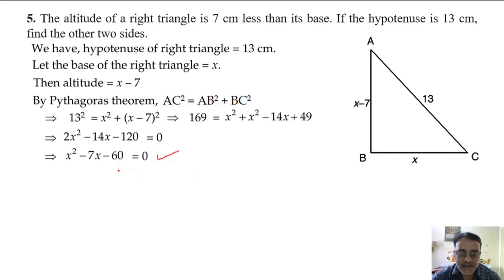Now what is the product here? Minus 60. And what is the sum? Minus 7. Product is 60, so we have to find two factors such that their difference is 7. 12 and 5, very good.